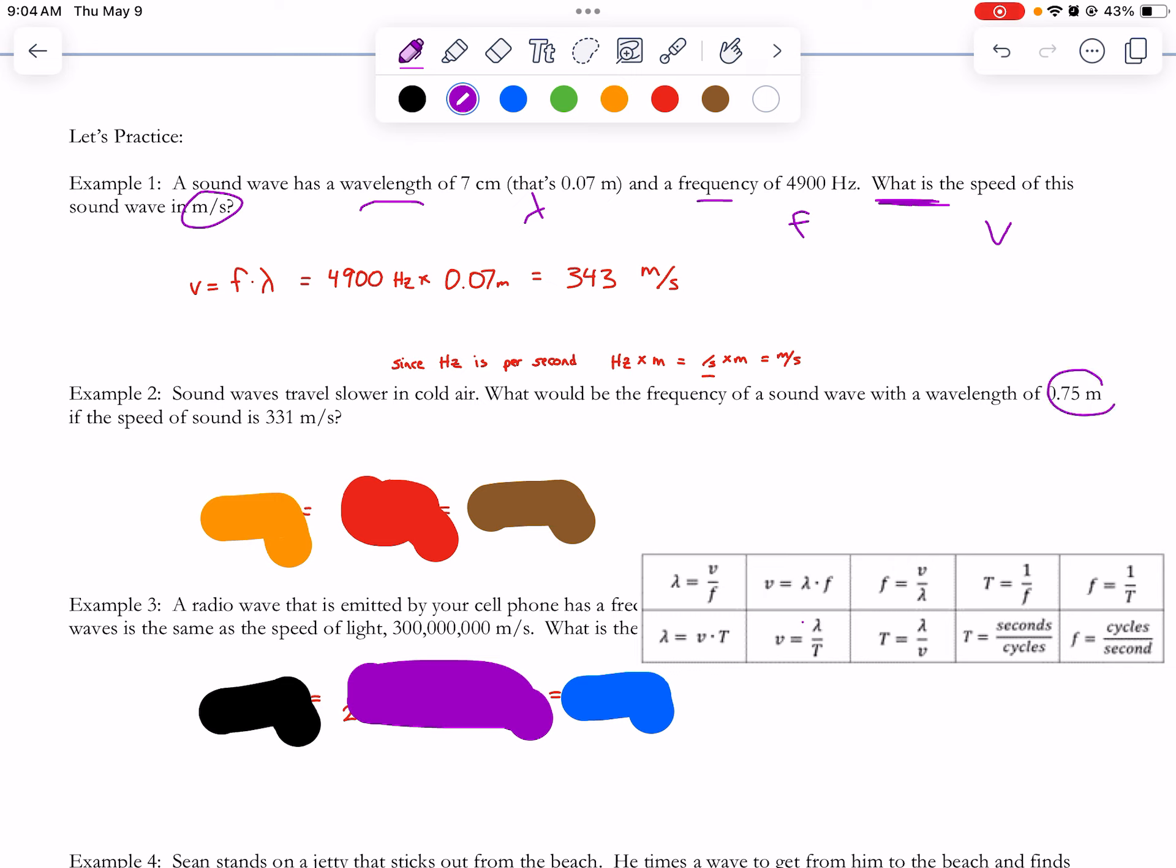There's a number 0.75. It says wavelength, so I'm just going to draw that symbol right there. It's not a very good drawing, but that's ours there. If the speed v is this number...